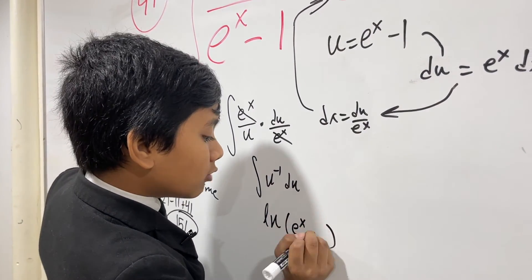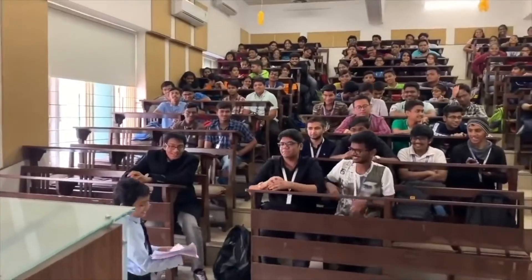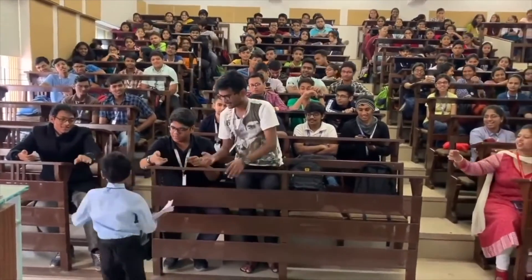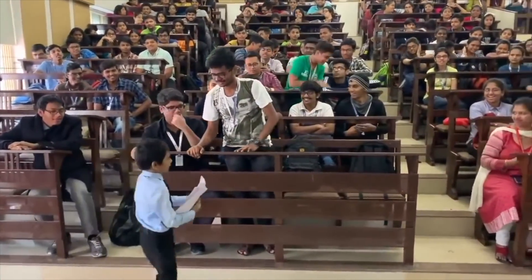And then plus C. That's it. Saborno Isaac Bari, who is known as the god of mathematics, became the youngest professor in the history of mankind.